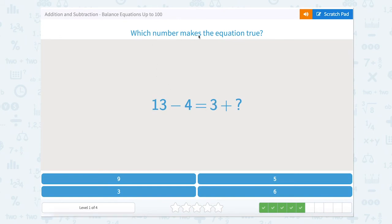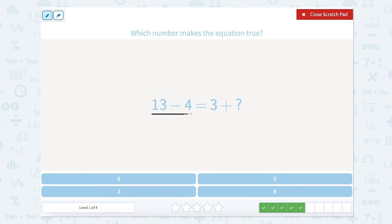Now what number makes this equation true? Let's use that scratch pad. We see that there's one side of the equal sign and two sides. This side over here has our complete with two numbers. So 13 minus 4 is 9. So 9 equals 3 plus something. Well, 3 plus 6 equals 9. So we're looking for 6.